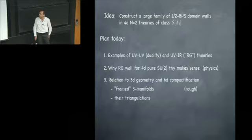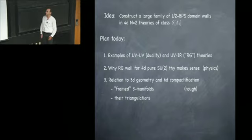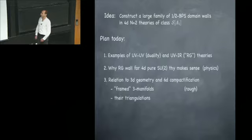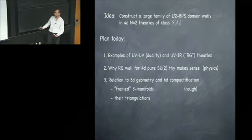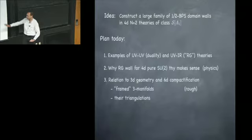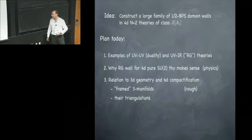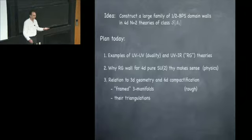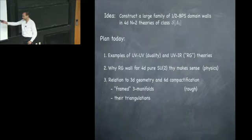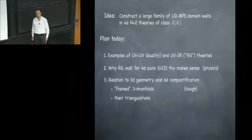The plan for the talk is a lot of physics and a little geometry. First, examples of how some of these duality wall theories look, since they're likely unfamiliar to most of the audience, along with what 3-manifolds they correspond to. Then an explanation of why the RG wall — the thing interpolating between a UV coupling region and an infrared Seiberg-Witten theory in its weak coupling frame — makes sense physically. Finally, a discussion of the 3-manifolds and their meaning in terms of 6D compactifications.